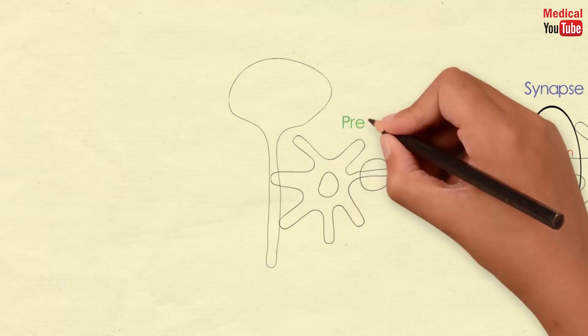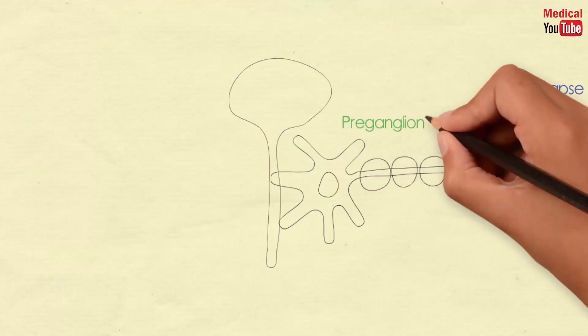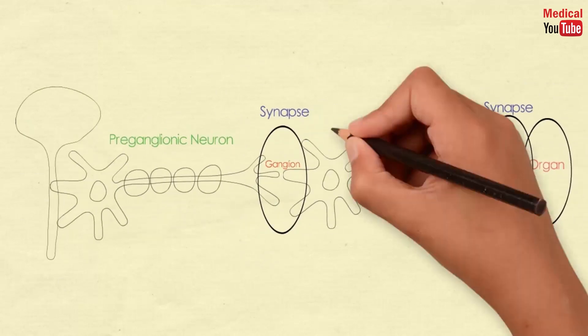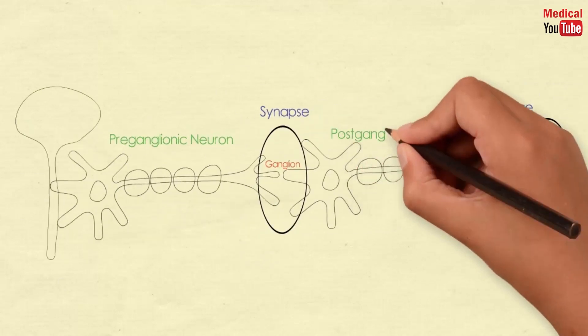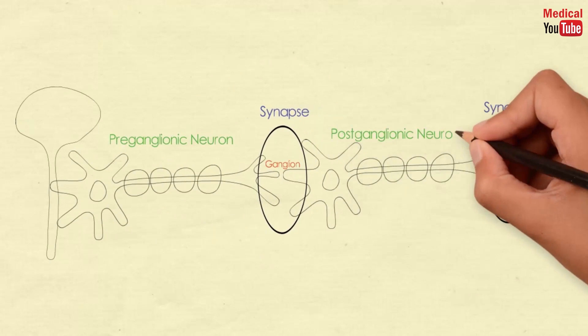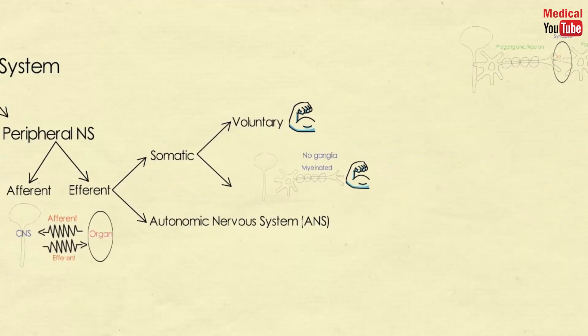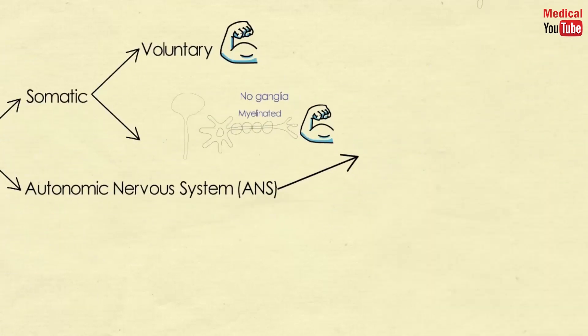The pre-ganglionic neuron is the neuron whose cell body is embedded in the CNS and ends at the ganglion. The post-ganglionic neuron has its cell body originating at the ganglion and ends at the effector organ.